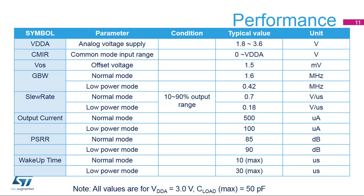The following table shows performance parameters for the STM32L4's op-amp. The op-amp can work from 1.8 to 3.6 volts from the VDDA supply with rail-to-rail input and output. The offset voltage can be calibrated down to 1.5 millivolts. It has normal and low-power operating modes: normal mode can have a gain bandwidth of 1.6 MHz, while low-power mode only has 0.42 MHz of gain bandwidth.